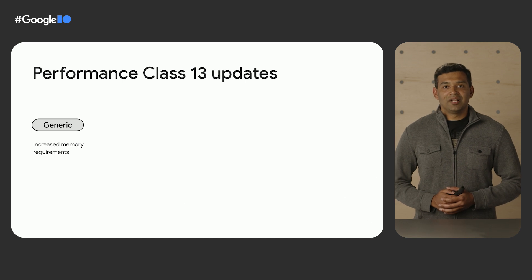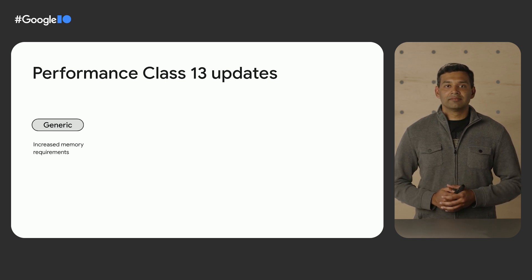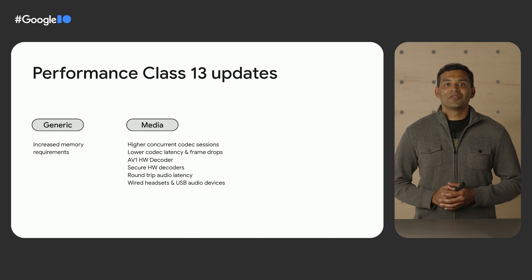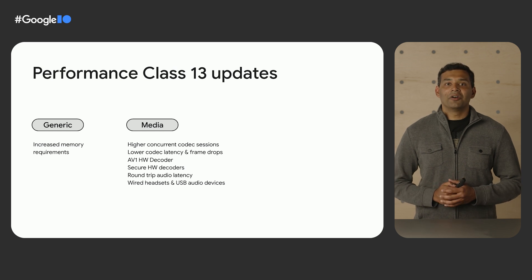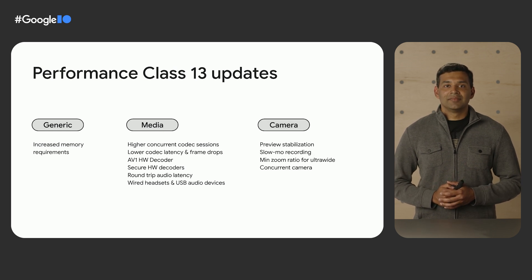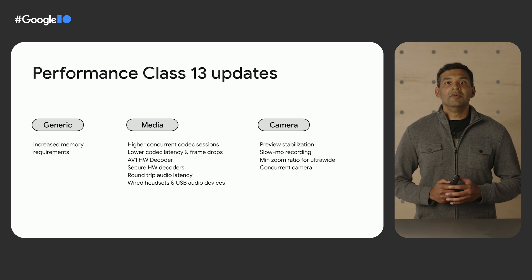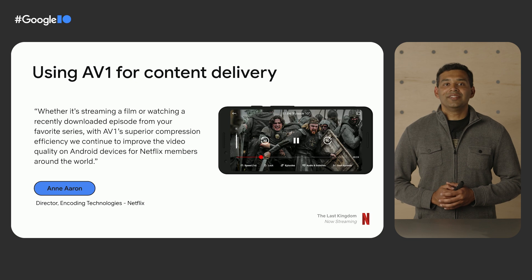Building off of Performance Class 12, Performance Class 13 introduces a number of new requirements and updates. These include increased memory requirements, higher requirements for concurrent codec sessions, and lower limits for codec latency and frame drops. We are also adding requirements for an AV1 hardware decoder, secure decoders in hardware, and round-trip audio latency. For camera, we are adding requirements around preview stabilization, slow-mo recording, minimum zoom ratios for ultra-wide, and concurrent camera. We hope these additions will help developers improve media experience for their users.